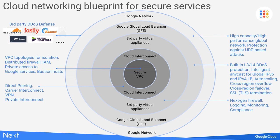To summarize secure application delivery: think of it as protecting layer with another layer. You have your secure VPC, secure hybrid connectivity, complemented with third-party virtual appliances. Deploy the Google global load balancer to get DDoS defense, backed by Google's high-capacity, high-performance global network for protection even against UDP-based attacks, further complemented by third-party DDoS providers. It's a layered approach to security. Now I'd like to invite my colleague Anna to talk about modern services.